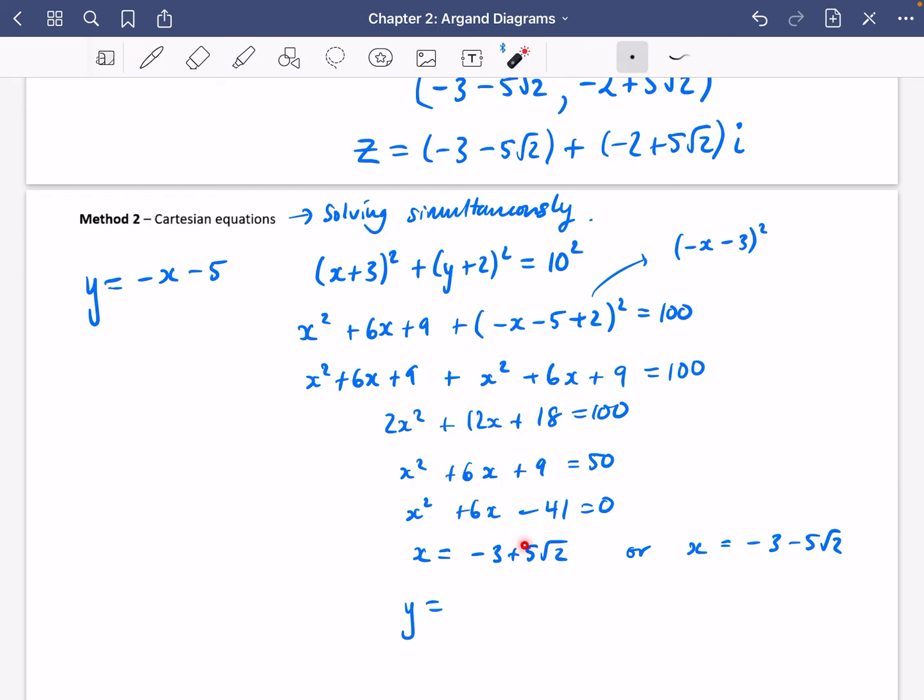So we know that y is minus x minus 5. So y would be this one here negated and then subtract 5. So it'd be 3 minus 5 root 2 minus 5. So that's minus 2 minus 5 root 2. And here we have y equals this one negated. So that's 3 plus 5 root 2 minus 5, which is minus 2 plus 5 root 2.